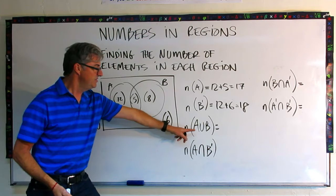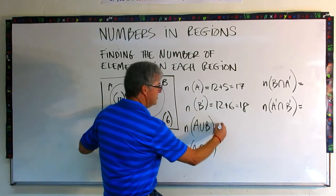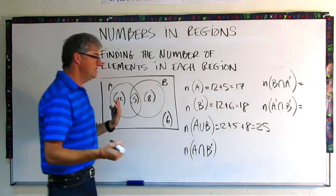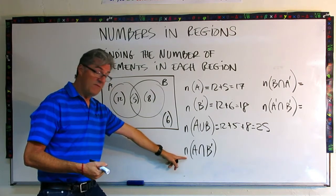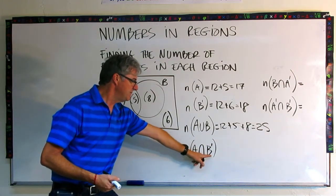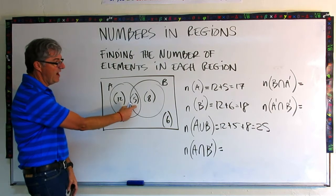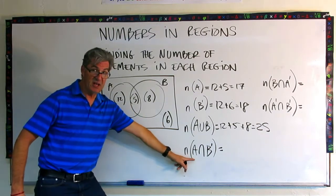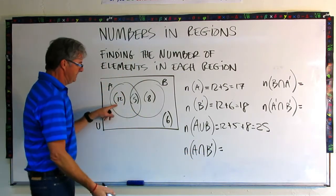For the number of elements in the union of A and B — remember, the union is all elements in both sets — that's 12 plus 5 plus 8, which is 25. Now, for the number of elements in A intersected with the complement of B, that means all elements in A that aren't in B. A has 17 total, but 5 of those are in B. The complement of B intersected with A gives us just this section: 12.